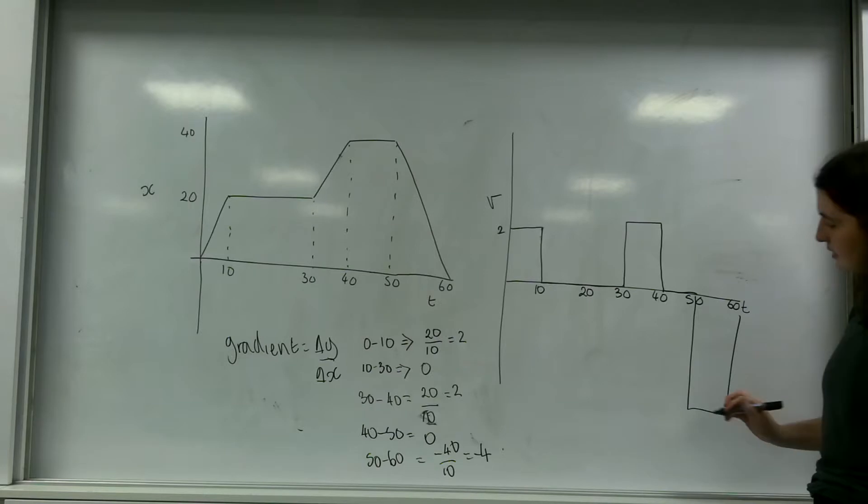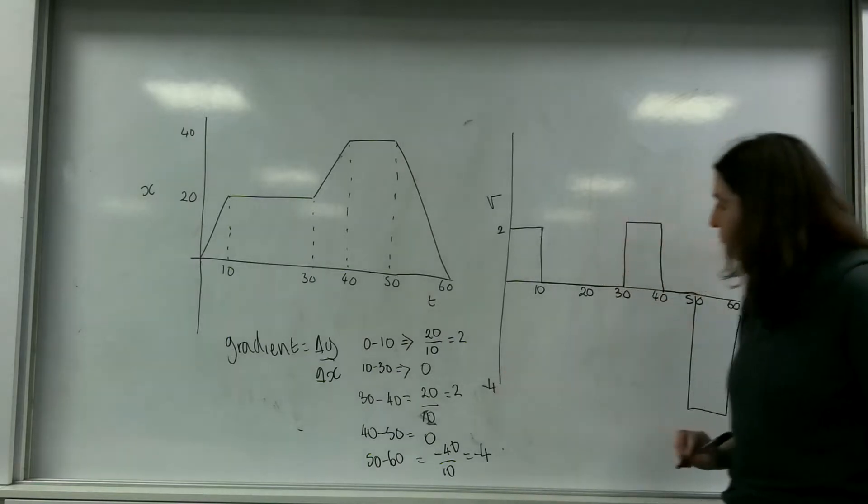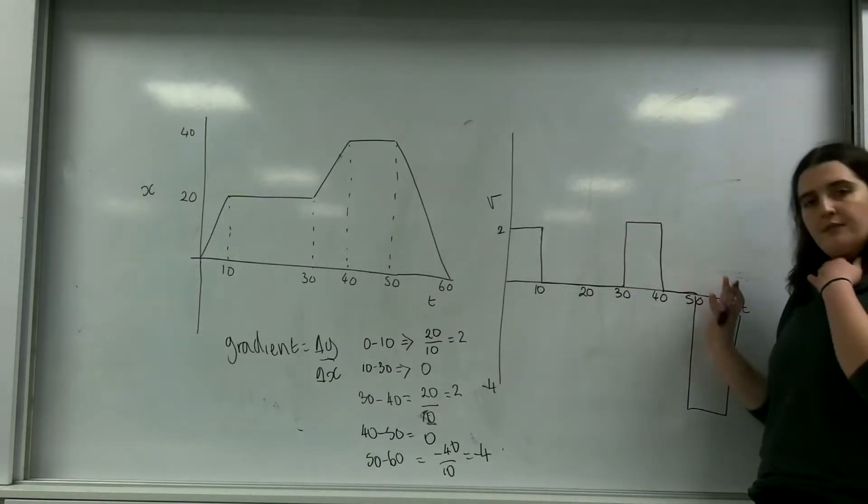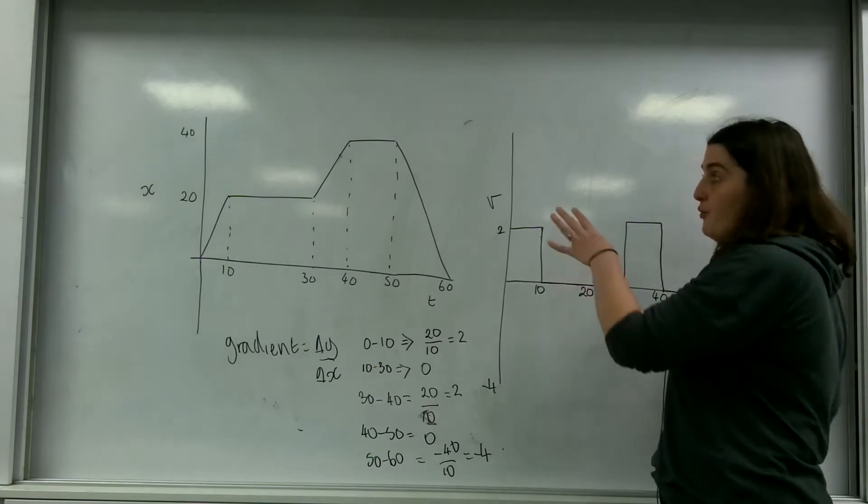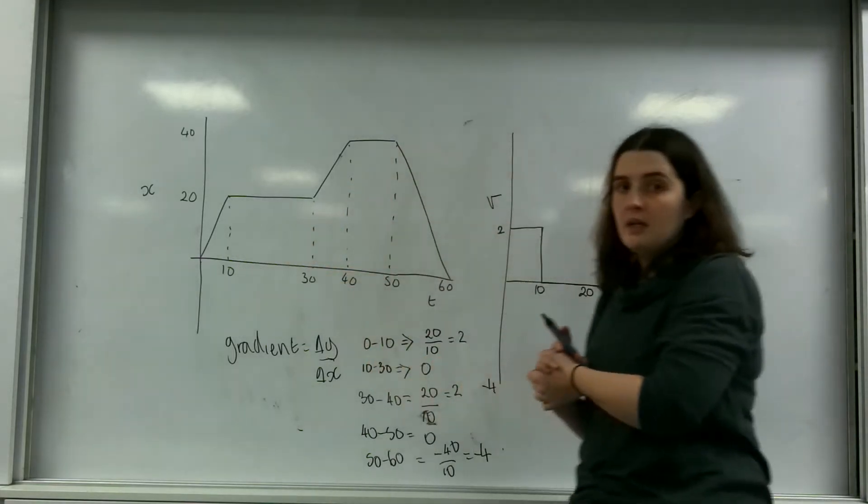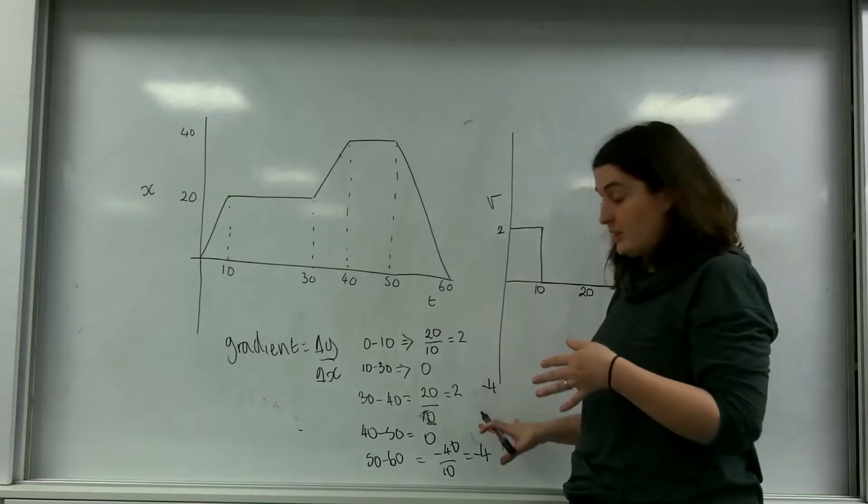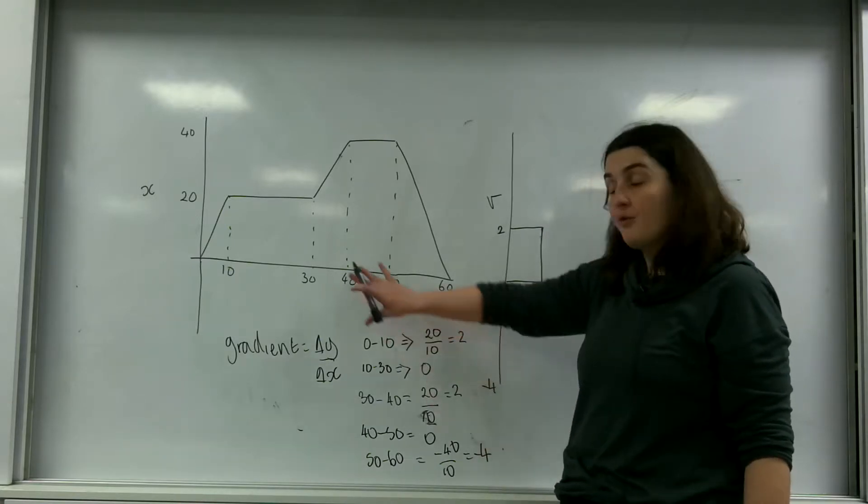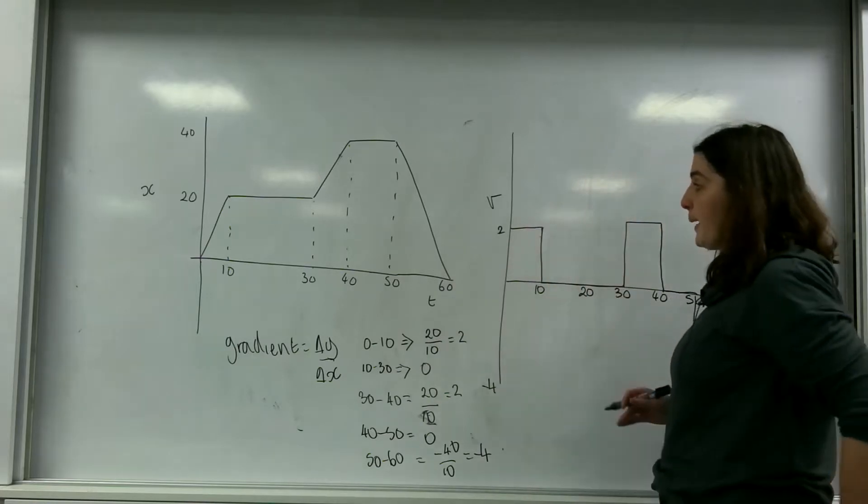So this here would be minus 4. So this is a representation of the velocity time graph from this graph here. So I was able to calculate the velocity by calculating the gradients of this graph. And this is what I've plotted on here.